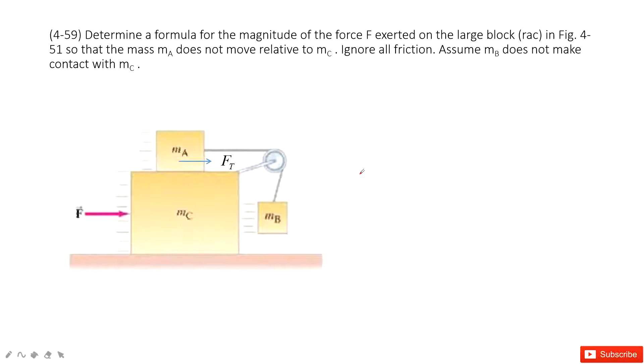In this system, we have three objects A, B, C. We have the external force F acting on it. When this system is moving, we see the mass A does not move relative to C. So A and C are kept the same acceleration. And B never hits C. This is the whole system.